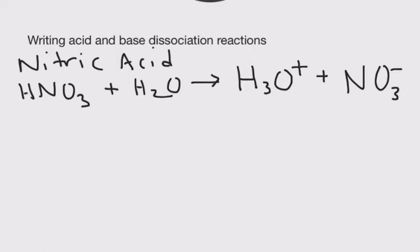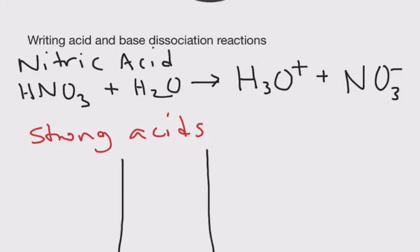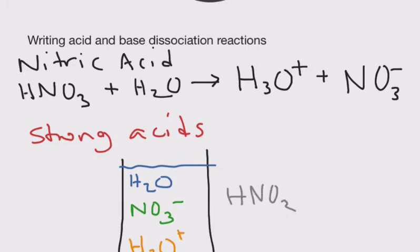When I say this is a strong acid, that means it dissociates completely. In our beaker of nitric acid we will have water, nitrate, and hydronium ion. What we won't have is any HNO3. Dissociates completely means it breaks apart completely - we don't have any of that species remaining.